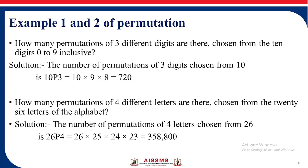Let us see some examples on permutation. How many permutations of three different digits are there chosen from 10 digits, 0 to 9? The number of permutations is 10P3, as we want to select three different digits from 10. So 10P3 = 10 factorial upon (10 minus 3) factorial = 10 into 9 into 8 = 720.